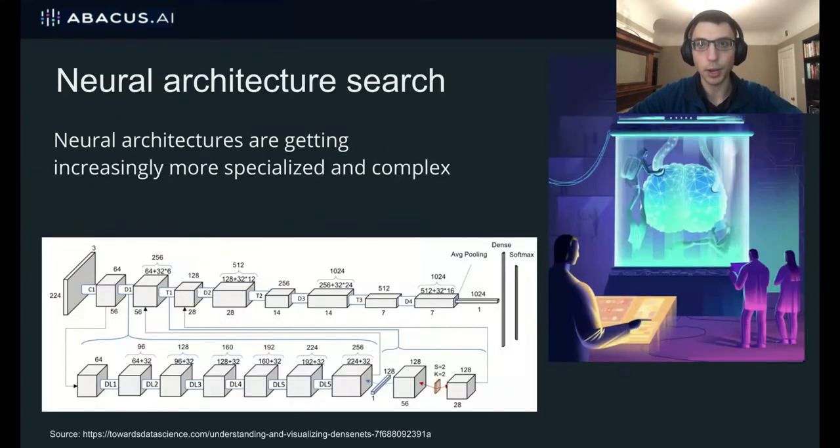Neural architecture search is a very popular area of machine learning, and some have even called it an inevitable next step in machine learning. The reason is because neural architectures are getting increasingly more specialized and complex. For example, the image on the bottom of this slide is DenseNet, which was designed in 2016 to achieve state-of-the-art accuracy on the ImageNet dataset. And as you can see, it's already quite complex.